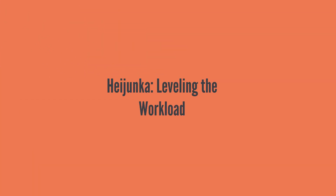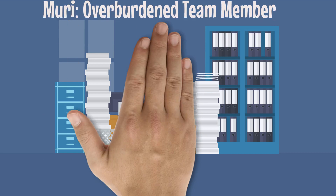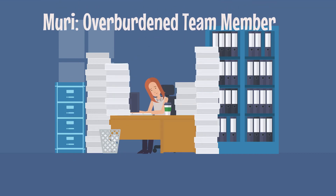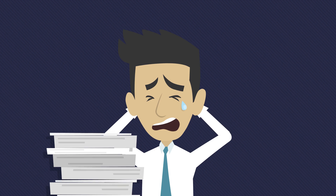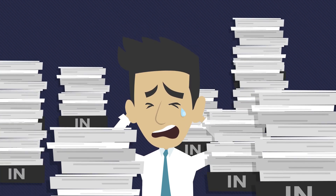Heijunka, which is a Japanese word that means leveling, is a concept that addresses Mura by creating consistency or evenness. Muri means to overburden. When people or machines are utilized for more than 100% to finish their task, they are overburdened. This creates productivity and quality problems in addition to major employee dissatisfaction.